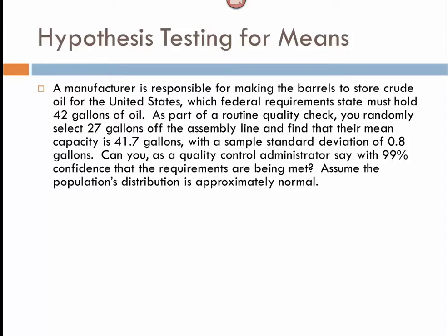All right. So, for this, our mean is what is expected. We assume we have 42 gallons of oil capacity in our barrels, unless we can prove otherwise. And so, our mu is 42, and the way it's worded, it just says that the requirements are being met. So, if they weren't being met, they'd either be greater than 42 or less than 42. Therefore, they don't really give us a direction. And we, therefore, say that mu is not equal to 42 for our alternative hypothesis.